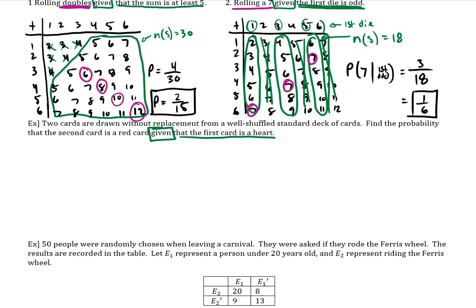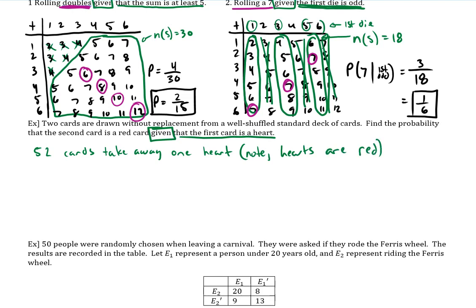I don't think I want to write all 52 cards — I want to just break down this given statement. They're saying given the first card is a heart. So initially we had 52 cards, but we're going to take away one heart, because the first card that is drawn is a heart. And note: hearts are red. Find the probability that the second card is red — I'll underline that.